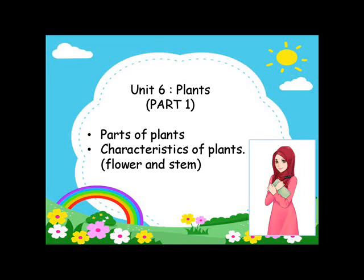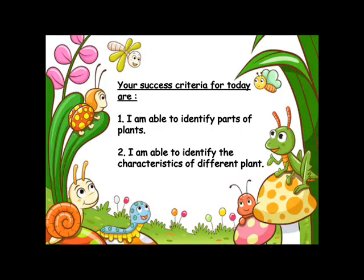Unit 6, Plants Part 1. Today we are going to learn about parts of plants and characteristics of plants for flower and stem. Your success criteria for today are: I am able to identify parts of plants, and I am able to identify the characteristics of different plants.